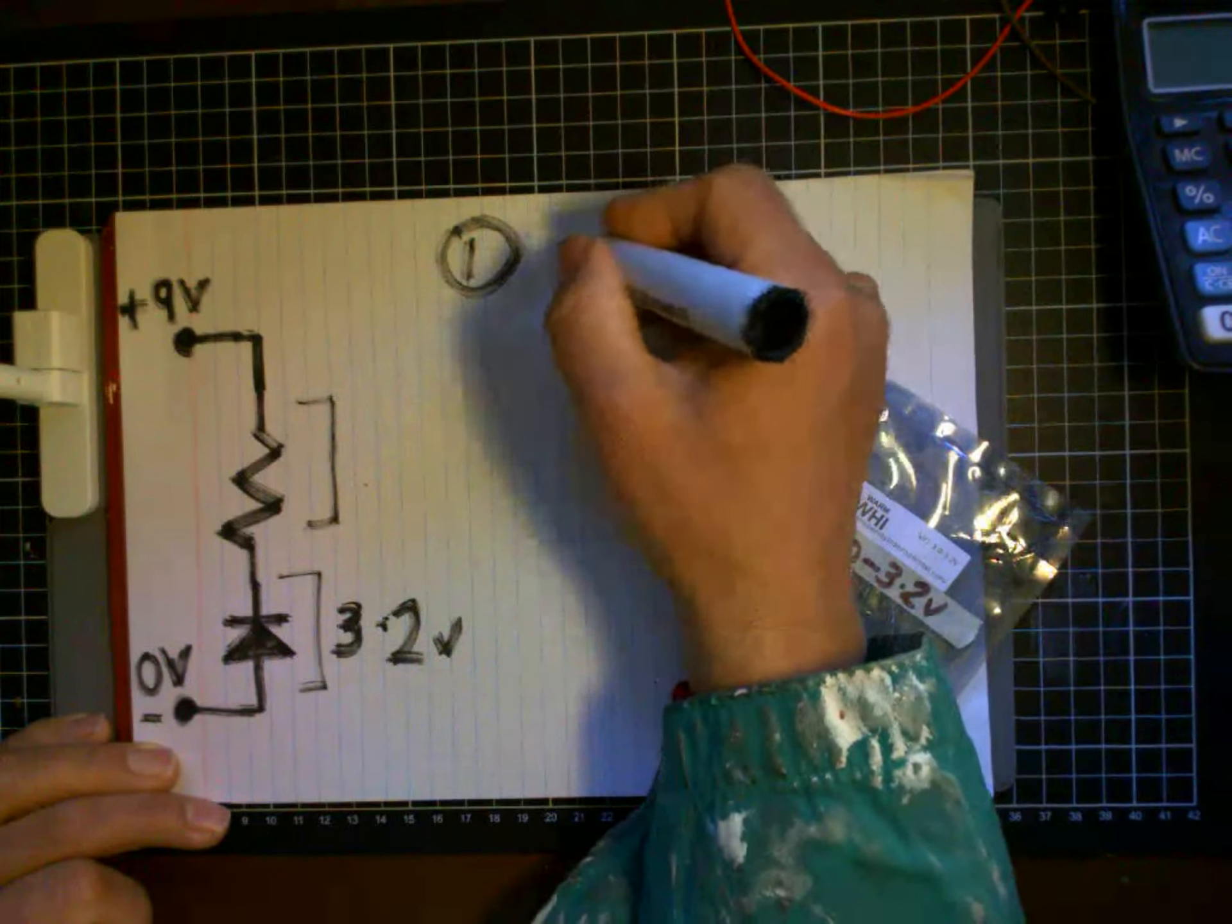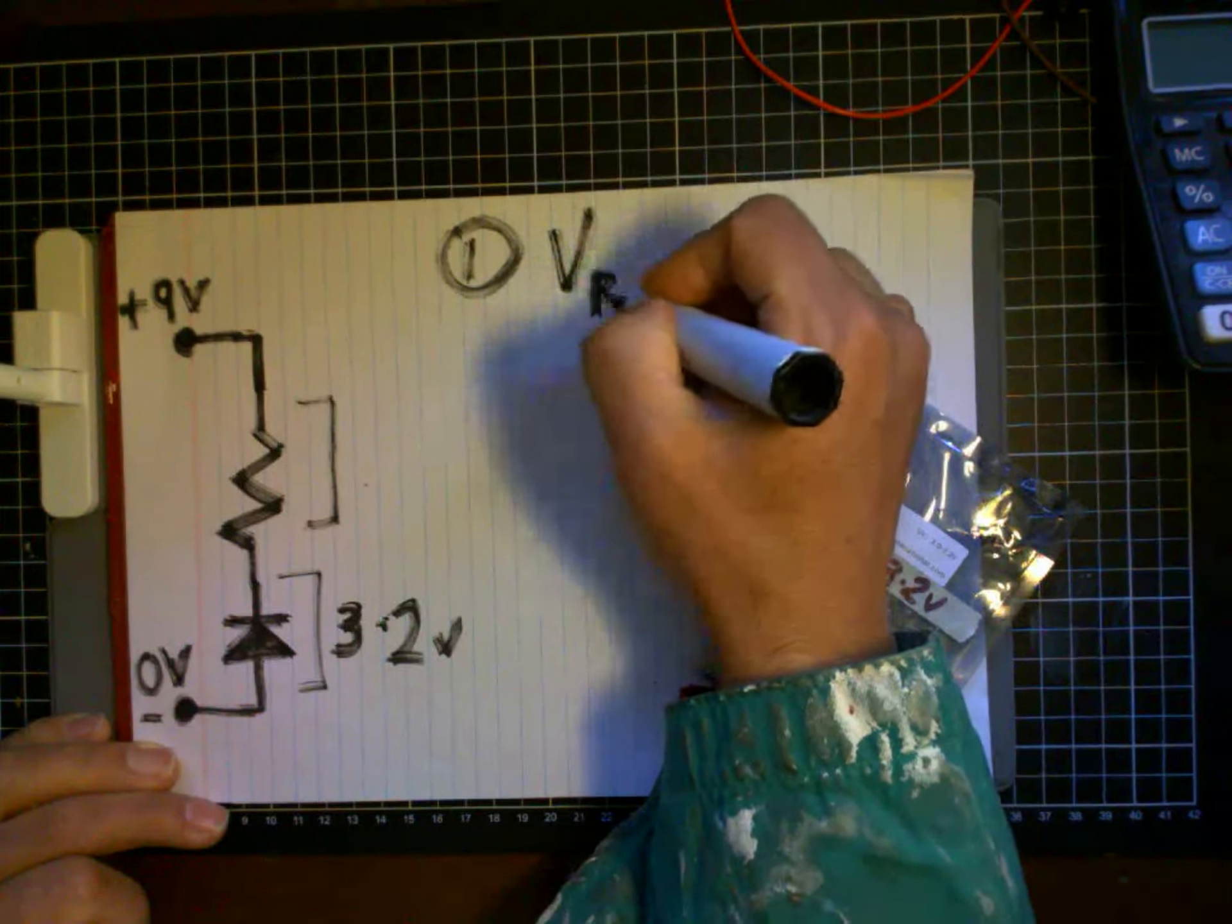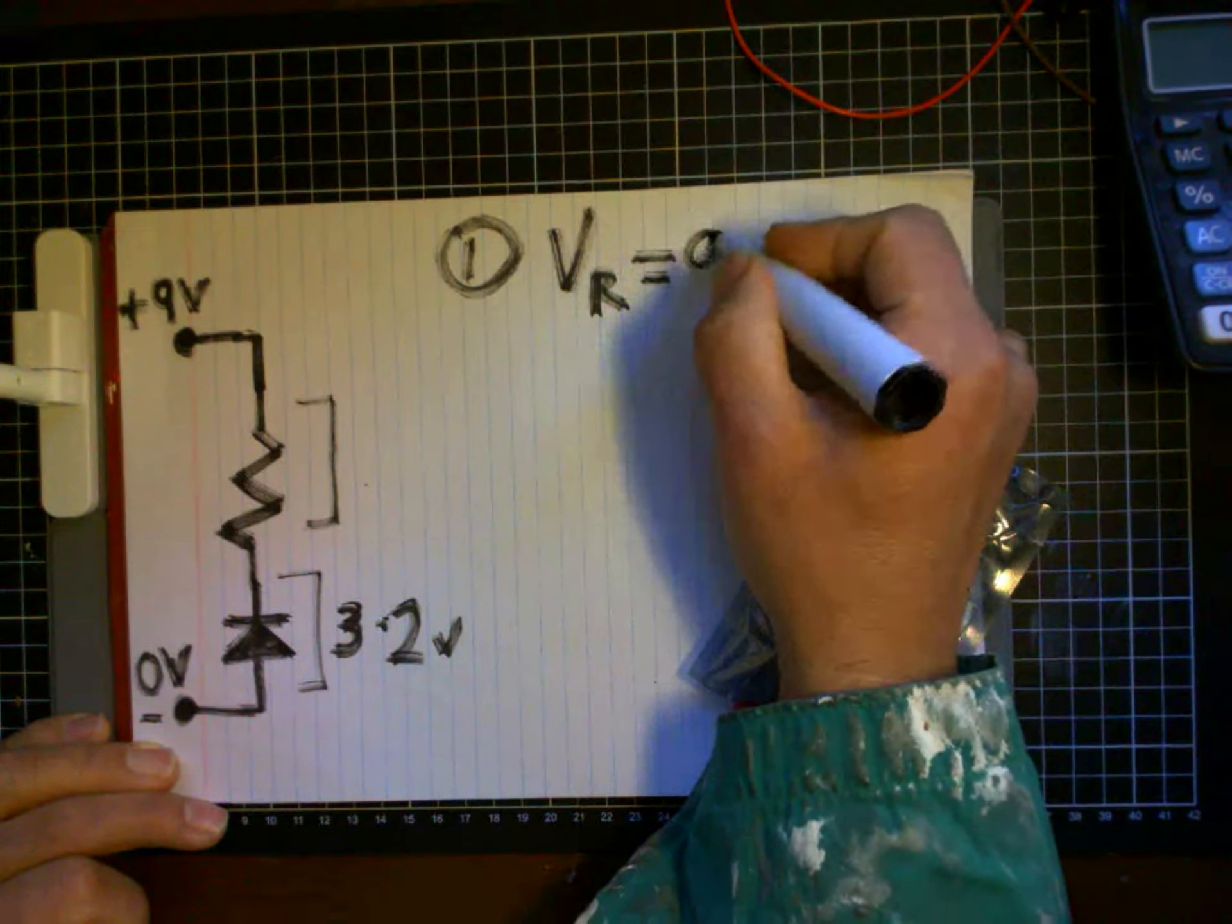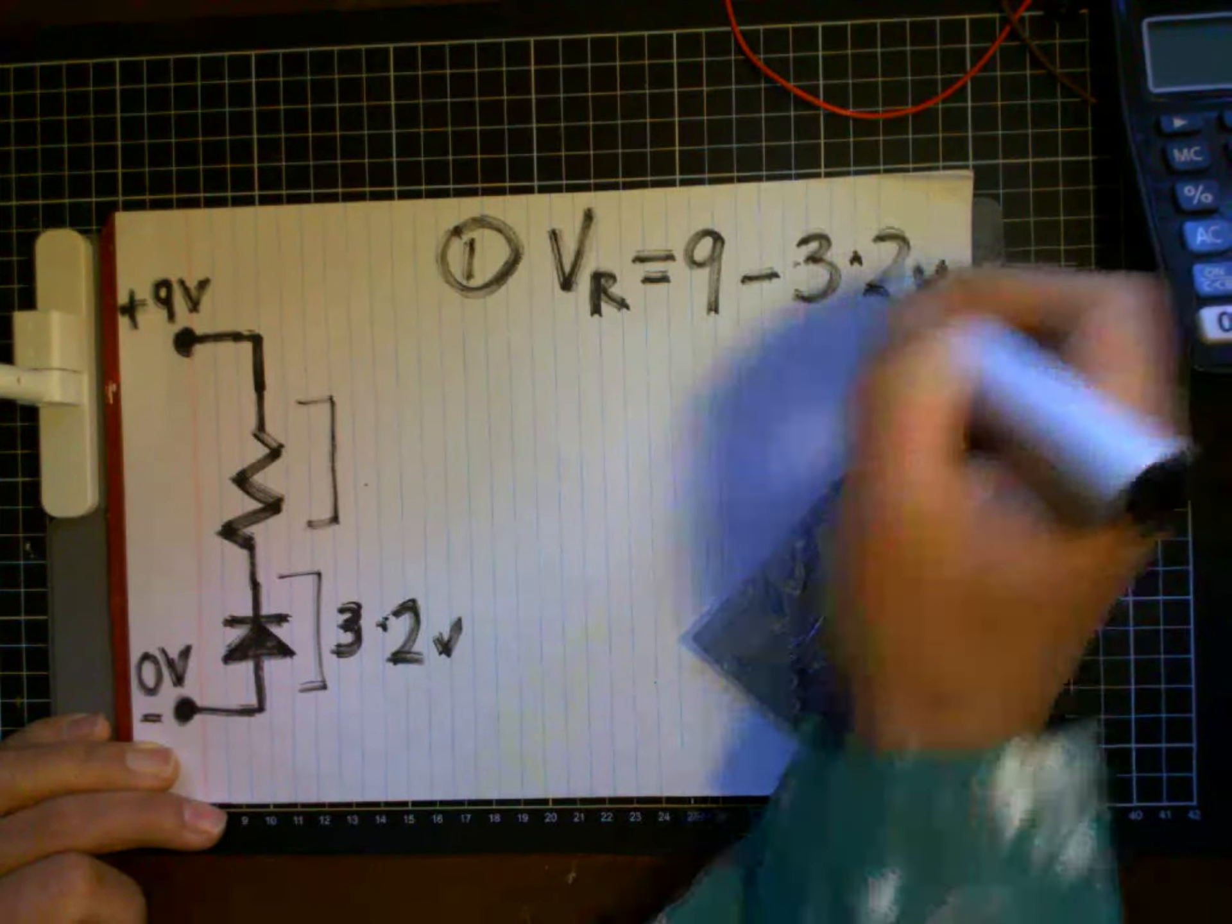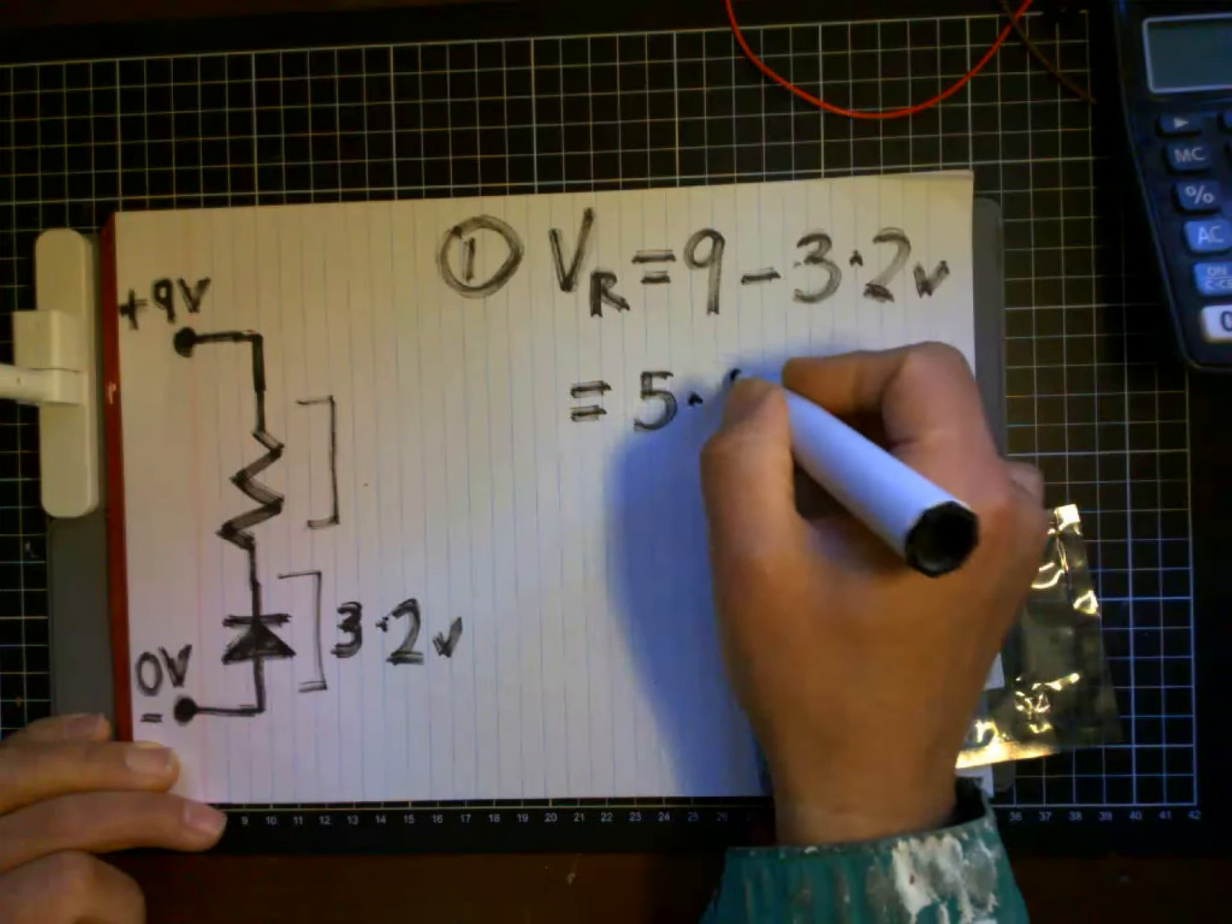So therefore, the voltage of the resistor VR equals the total voltage, which is 9 minus 3.2, and we get a value of 5.8 volts.